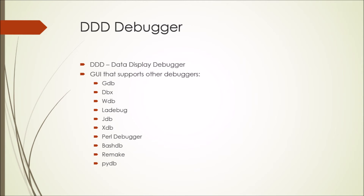The next debugger I'd like to talk about is called DDD, which stands for Data Display Debugger. DDD is a GUI, or graphical user interface, that supports other debuggers like GDB, DBX, WDB, Ladybug, JDB, XDB, the Perl Debugger, the Bash Debugger (BashDB), Remake, and the Python Debugger (PyDB). It is used commonly because it is able to display information such as data structures in graphical formats, instead of just text like GDB and Valgrind.